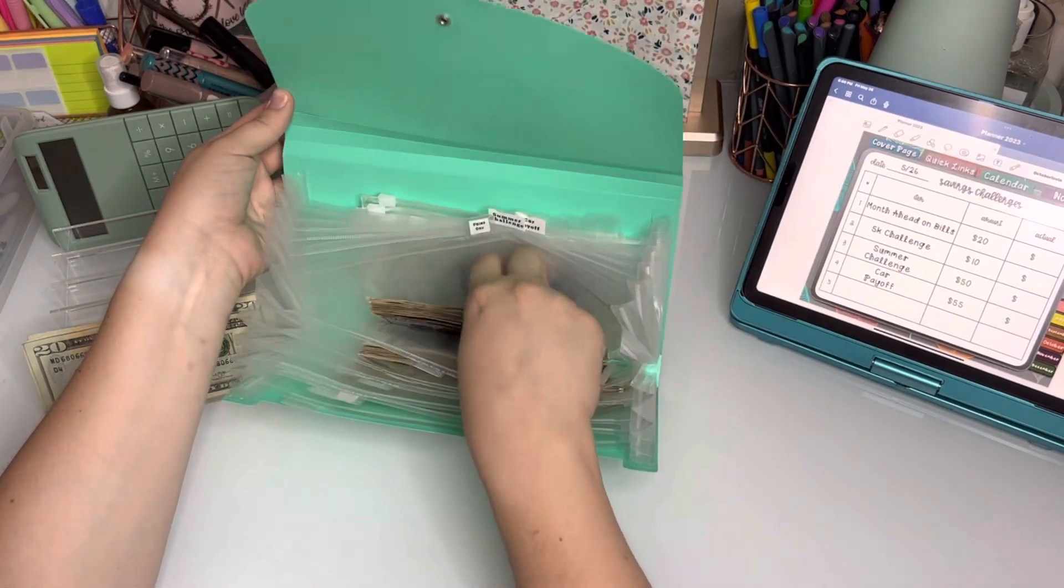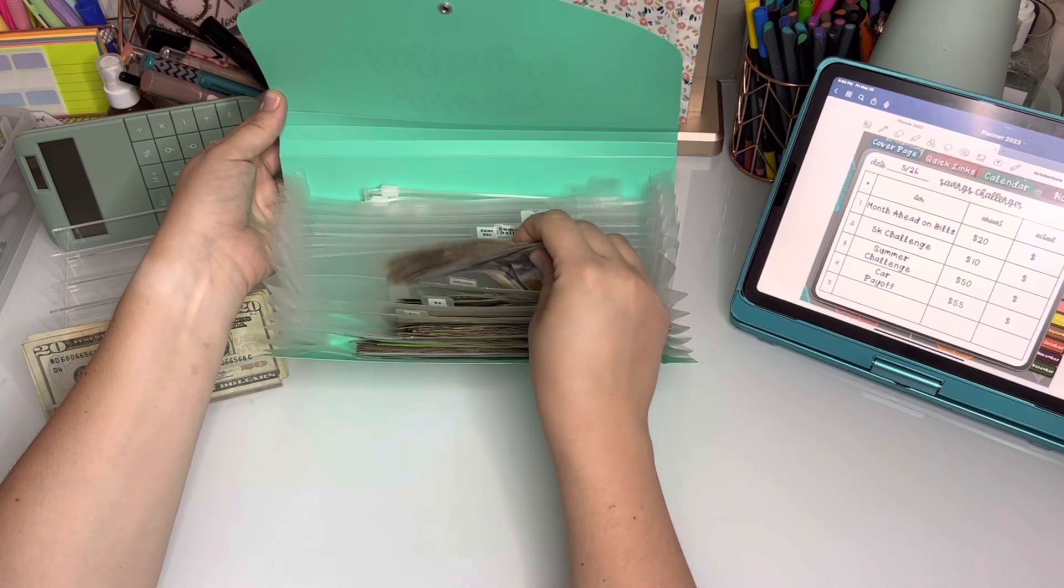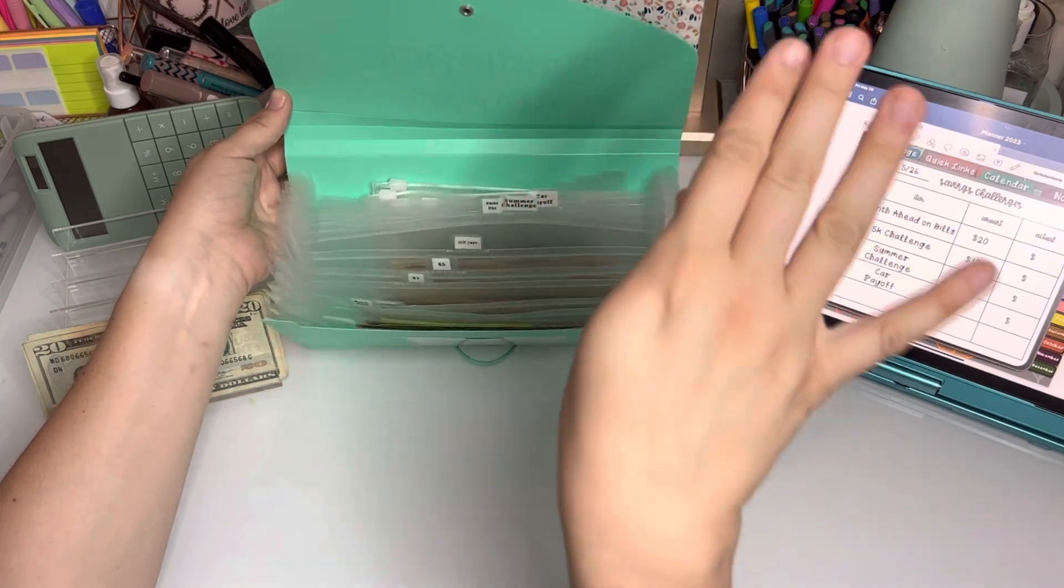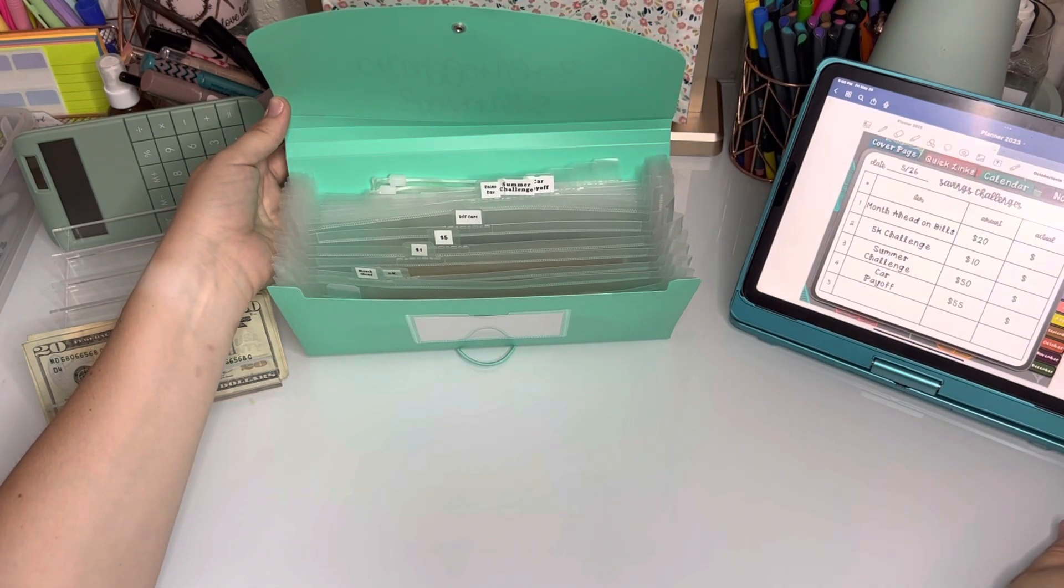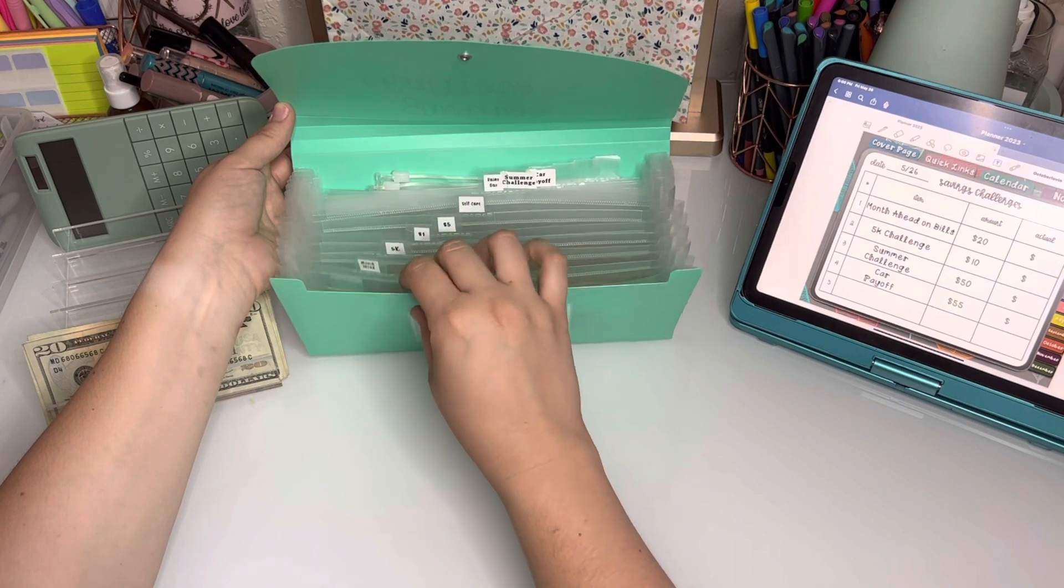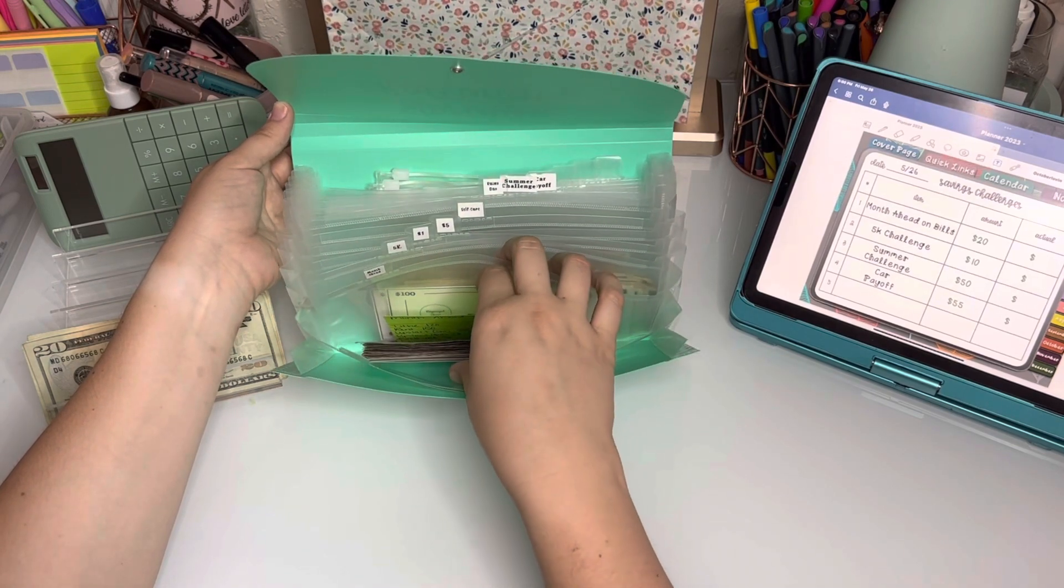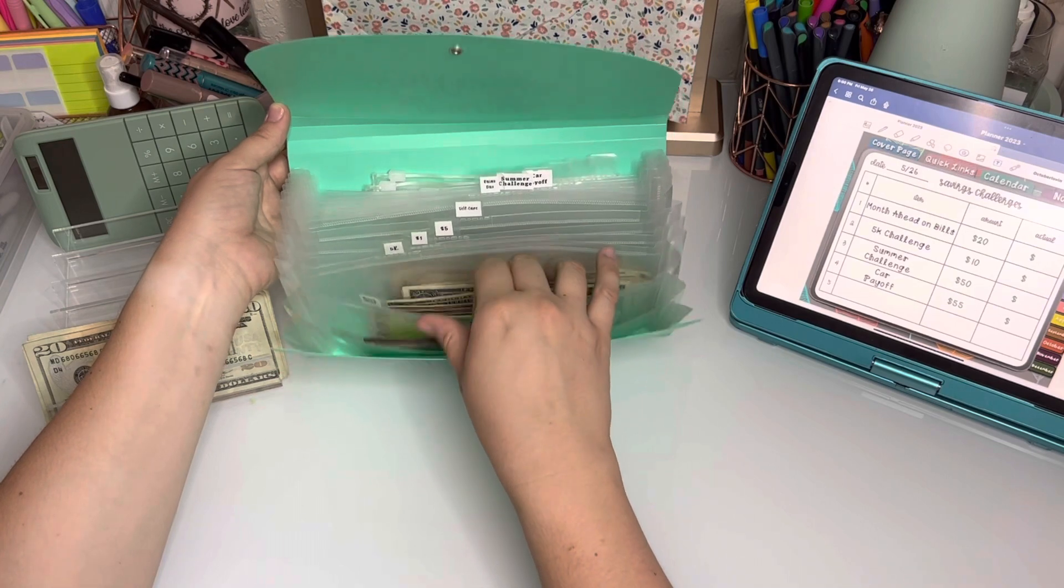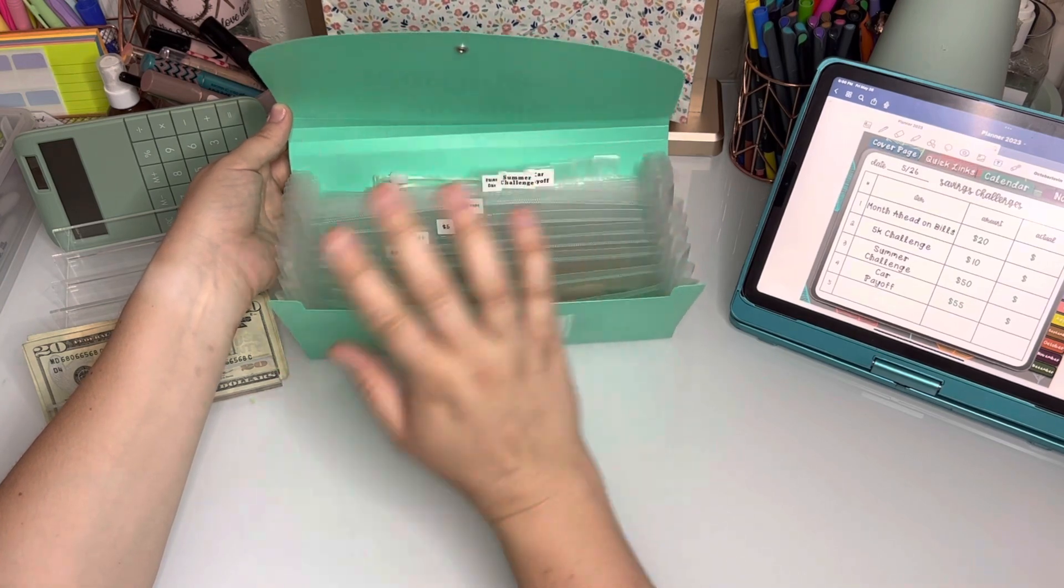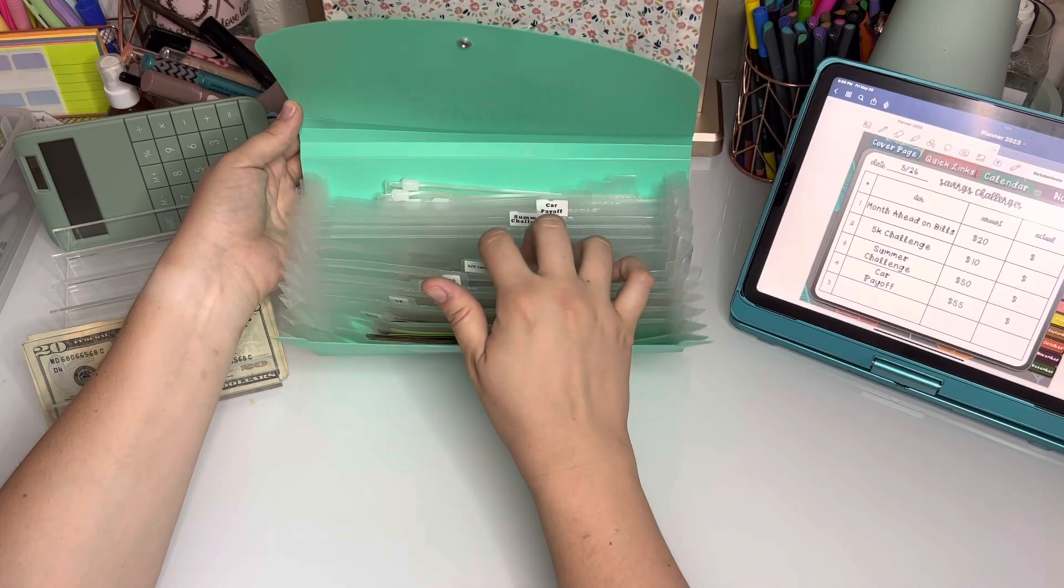But rainy day, I literally have no idea what to do with this money. I may do a separate video and just put it in my savings, like my long-term savings. I don't know because this is kind of my long-term savings right here. I don't know if I want to put it for month ahead or 5k or what, but we're just gonna keep that there and I'm gonna leave those labels so I know what they are.